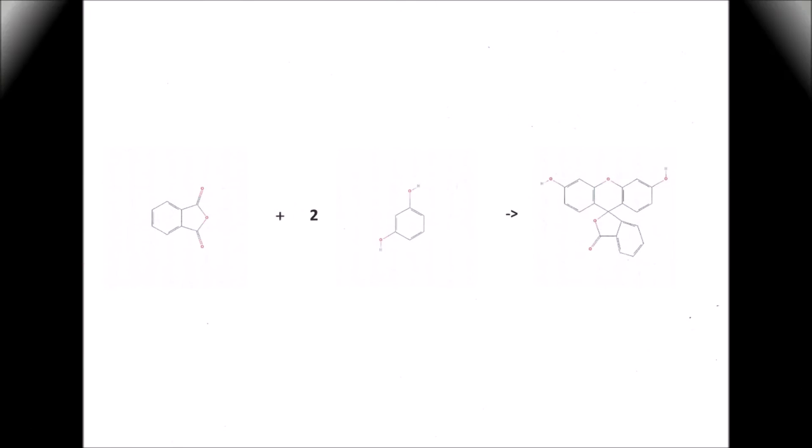And here's the formula for the synthesis. After phthalic anhydride has been formed by heating phthalic acid with the release of water, one molecule with two molecules of resorcinol undergoes a double condensation reaction, in the course of which fluorescein is formed.